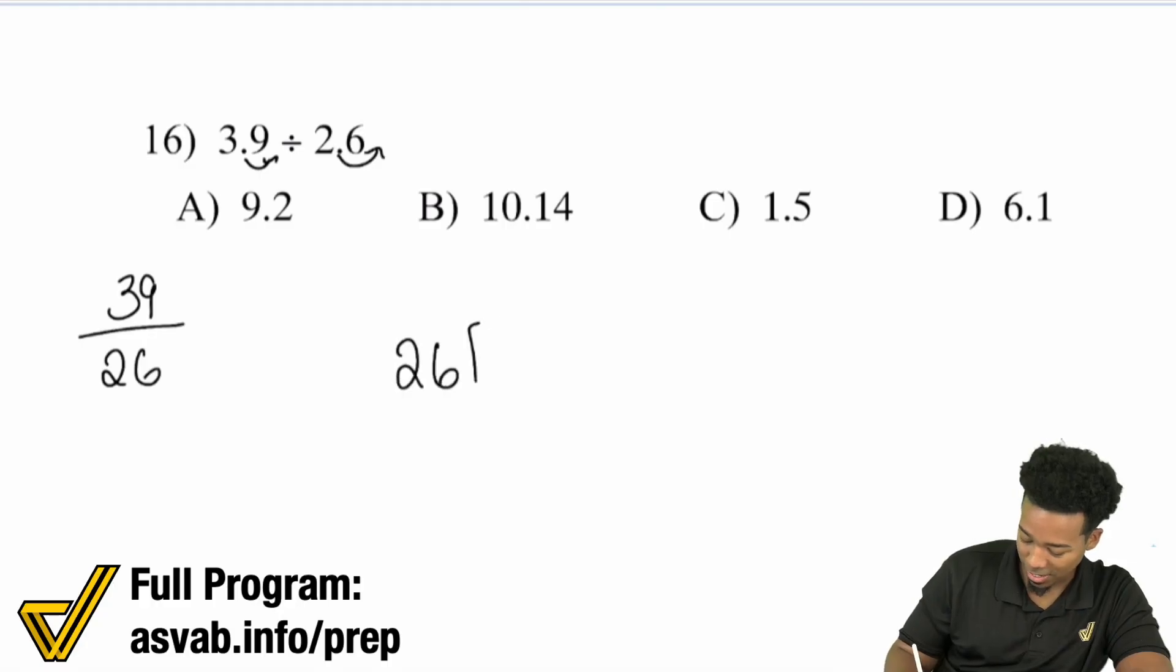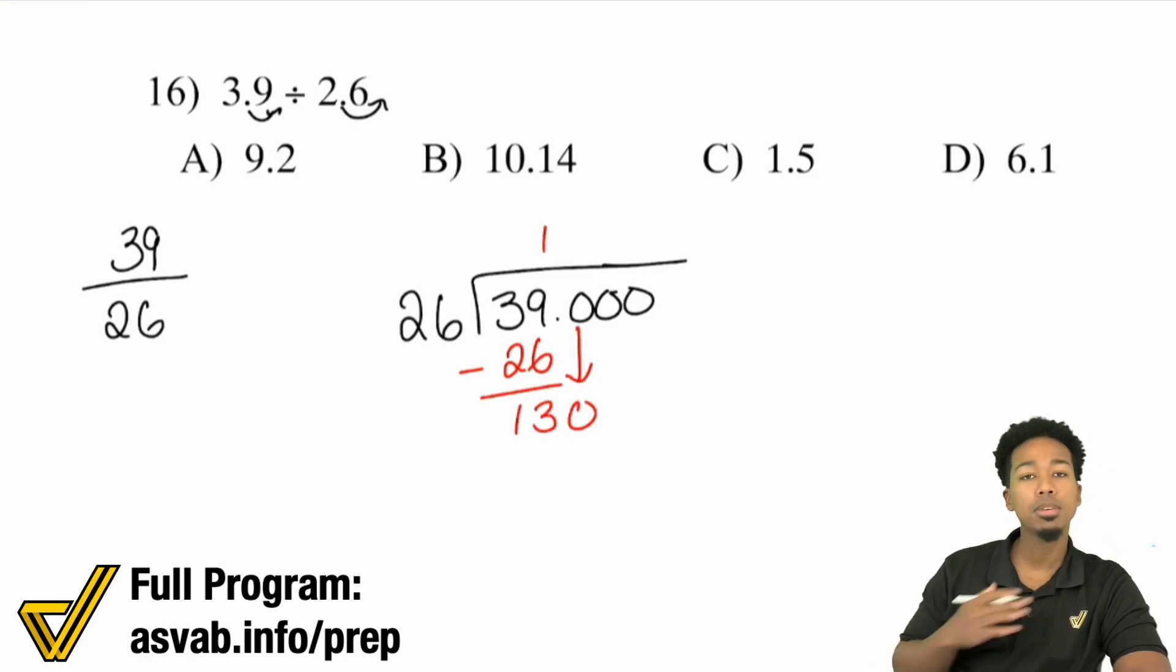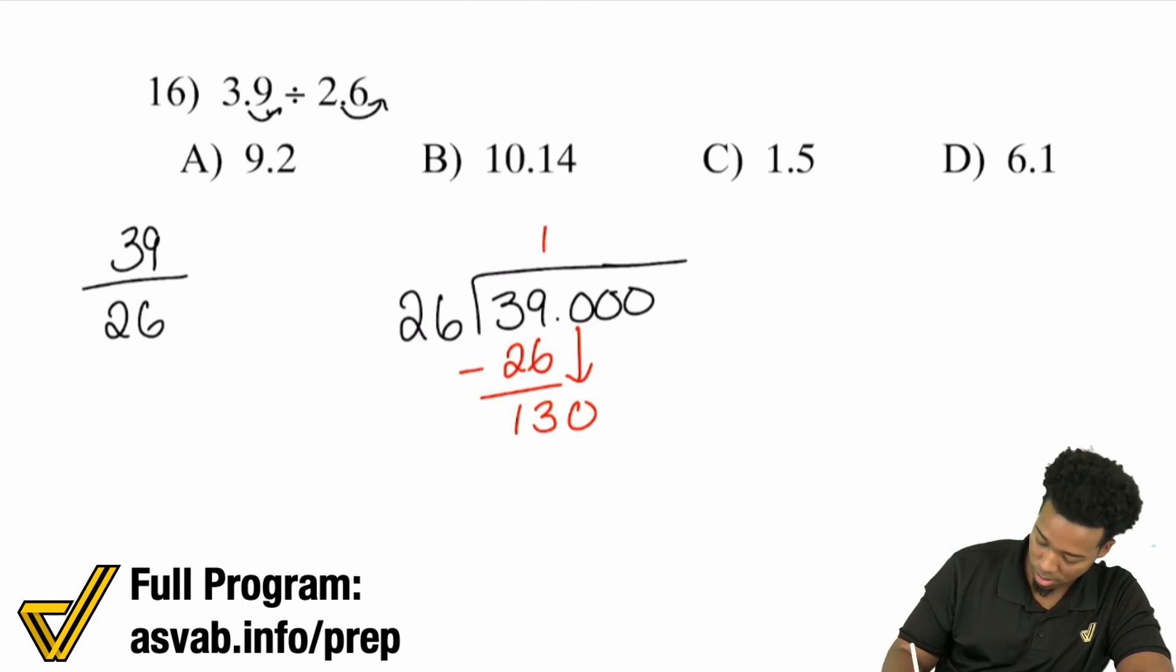So 26 goes into 39, and use a decimal place just in case. 26 into 39 is 1 time. So you have 13, bring in that zero, and knowing my mental math, I know that 26 times 5 is 130. So here, that would end up being 1.5, and we are done.